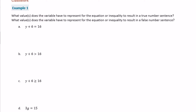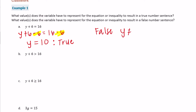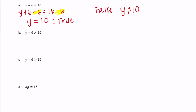Part a: y plus 6 equals 16. To solve it, we subtract 6 from both sides: y plus 6 minus 6 equals 16 minus 6, so y equals 10. For it to be true, y must equal 10. For it to be false, y is anything but 10, so y is not equal to 10.